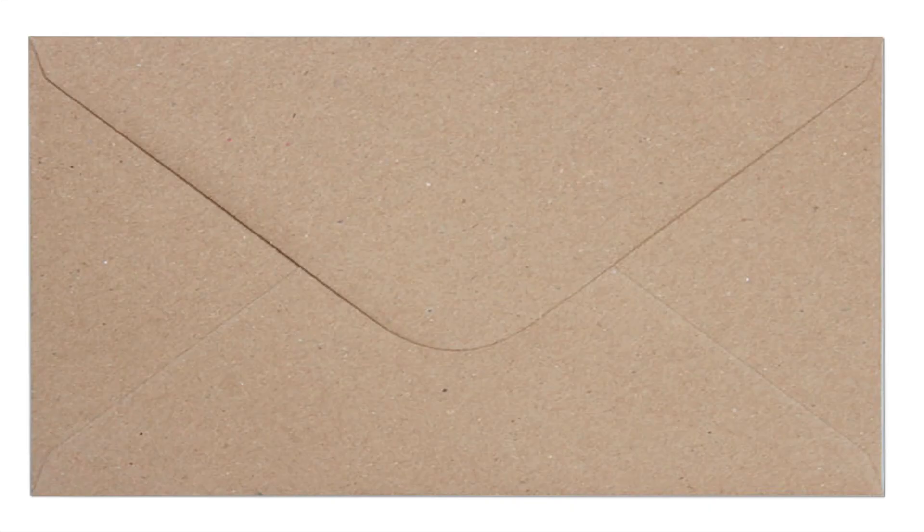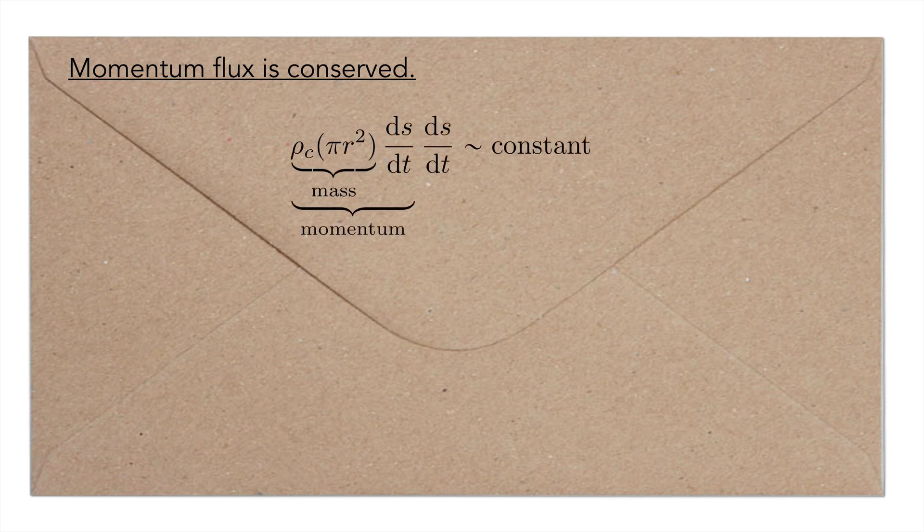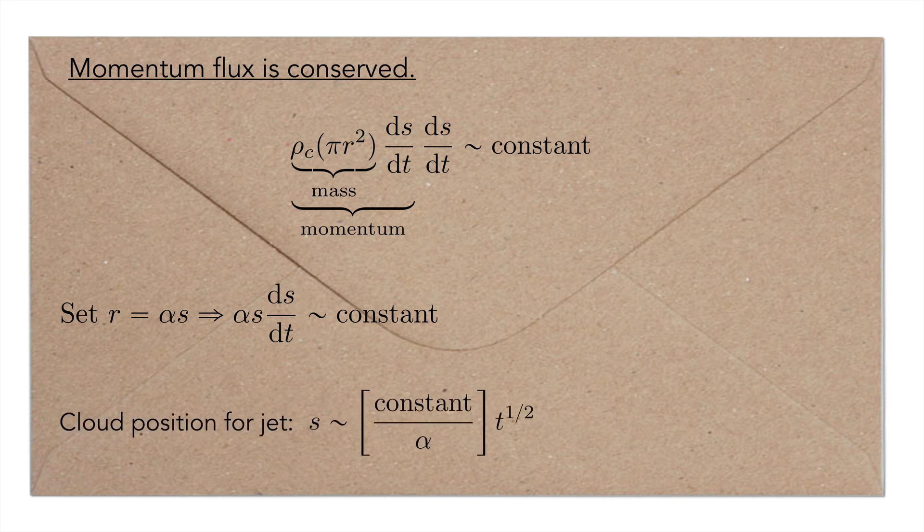Let's do a back-of-the-envelope calculation of this phase. As noted in 1956, even though mass is not conserved for the jet, momentum flux is conserved. You can write down the momentum flux for the different radii, which includes the density of the cloud at that point, the area of the disk, and then the velocities ds/dt. Set R equal to α times S for the entrainment hypothesis, and solve the equation to obtain a law for the cloud position, which grows like time to the one-half.